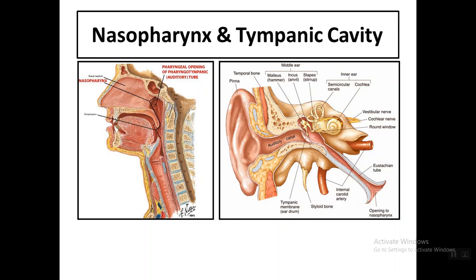The auditory tube connects the nasopharynx with the tympanic cavity of the middle ear. Any problem or infection in the nasopharynx can travel through the auditory tube and become a problem in the middle ear.